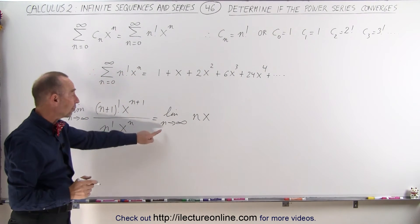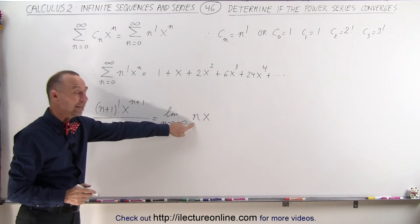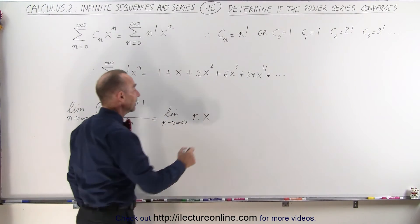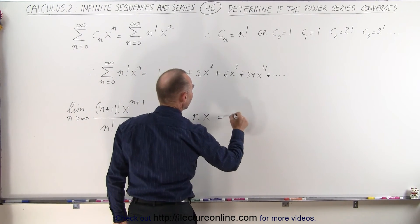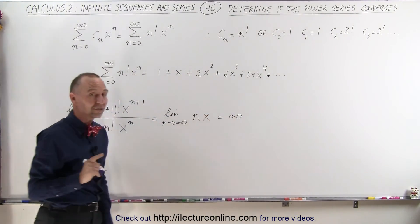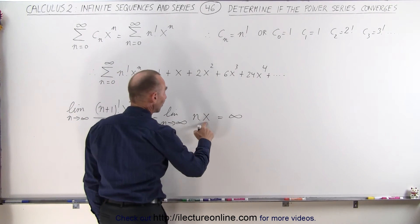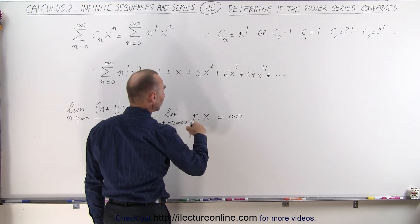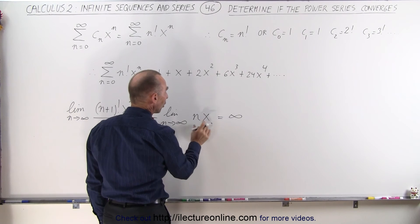So of course you can see that as we take the limit as n goes to infinity, this will indeed become infinity. So this is equal to infinity, unless there's only one exception: if x is equal to 0. 0 times n, as n becomes larger and larger, will always be 0.